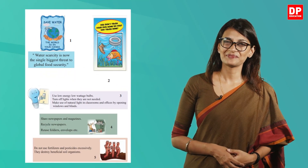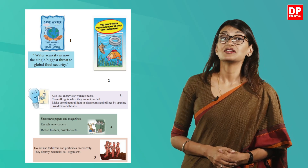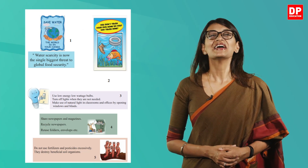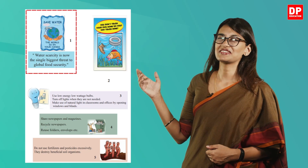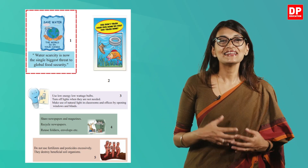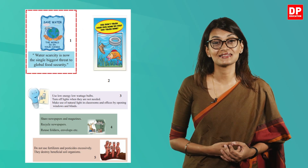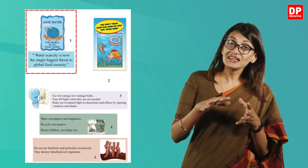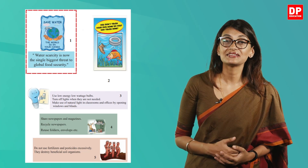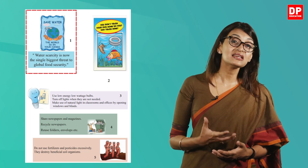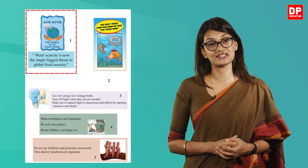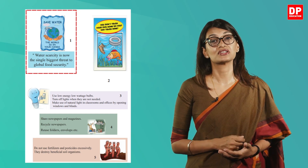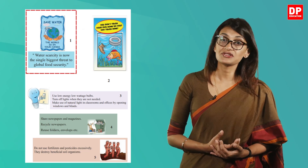Let's look at the posters together. You are asked to read the following posters and write the message conveyed by each one. Look at poster 1 — it urges you to save water and states that the world is in your hands. There is also a fact presented at the bottom in inverted commas: water scarcity is now the single biggest threat to global food security. Scarcity means a shortage — in this case, a shortage of water.